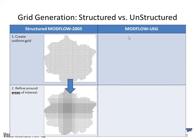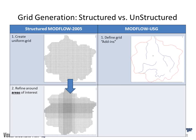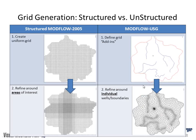Grid generation for Modflow USG differs significantly from structured Modflow. With structured Modflow 2005, you define your model extent, overlay a uniform grid, and refine around areas of interest — but refinement results in extra cells outside the area of interest, which can cause convergence or stability issues. With Modflow USG, your points, polylines, and polygons are add-ins to the grid generator. You can refine around individual wells and boundaries with different refinement level factors — different factors around wells, along polyline segments, or around the model edge.